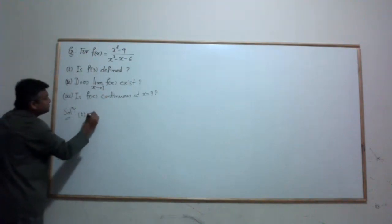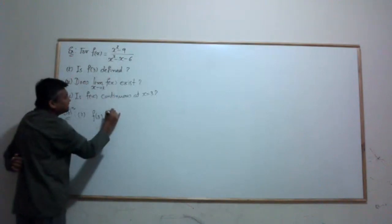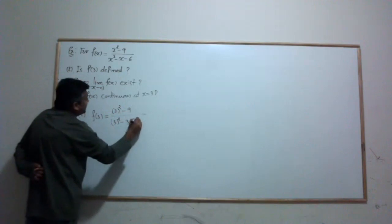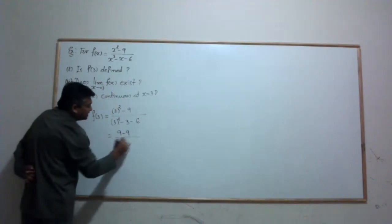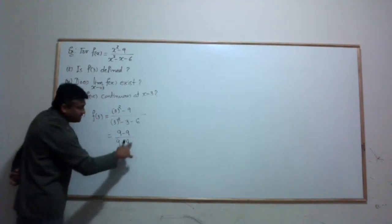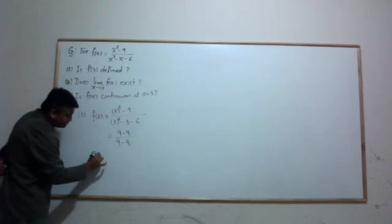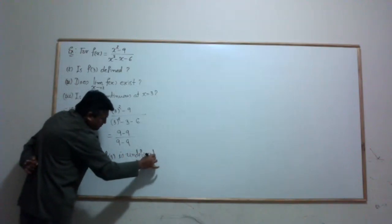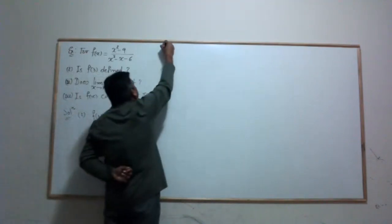To answer the first question, I plug x = 3 into the function. I get (3² - 9) / (3² - 3 - 6). In the numerator I get 9 - 9, and in the denominator I also get 9 - 9. The denominator turns out to be 0, so this function is undefined. f(3) is undefined because the denominator is 0.